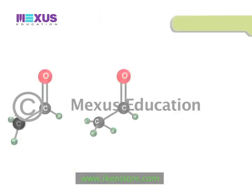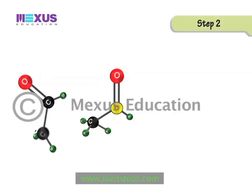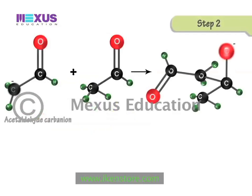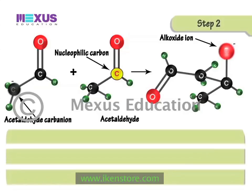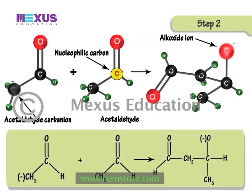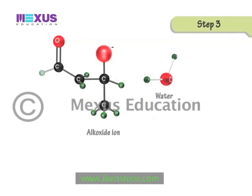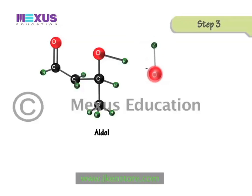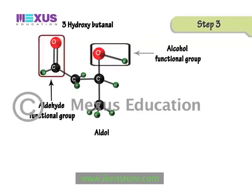In step 2, the acetaldehyde carbanion attacks the carbonyl carbon of another acetaldehyde molecule, forming an alkoxide ion. The alkoxide ion formed is also an intermediate in the reaction. In step 3, the alkoxide ion takes a hydrogen from a neighboring water molecule to form an aldol and a hydroxide ion. The aldol formed in this case is 3-hydroxybutanal — a product containing both an aldehyde functional group and an alcohol functional group.